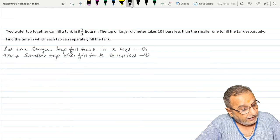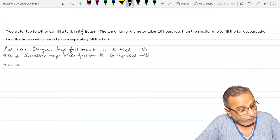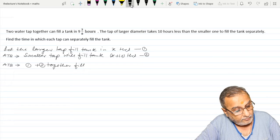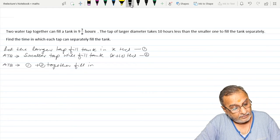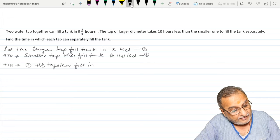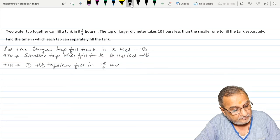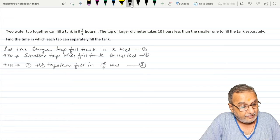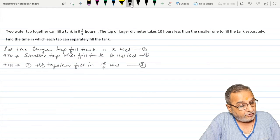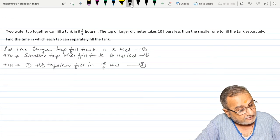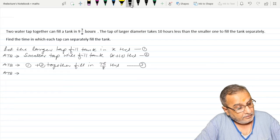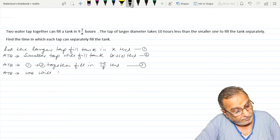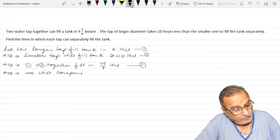And according to the question, one plus two together fill in 9 3/8, that is 75 upon 8 hours. We need to find the time separately for the larger one and smaller one. According to the question, we will compare reciprocally.